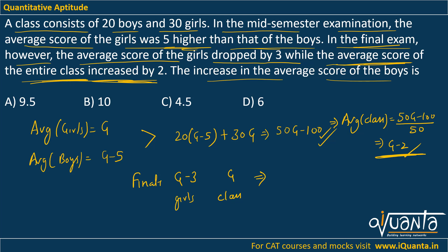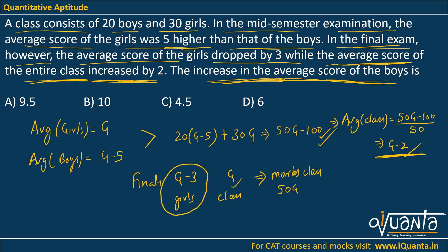In the final exam, if I find out the total number of marks scored by the whole class — the average of the whole class is g, so total marks will be 50g because there are 50 students. What we are ultimately trying to find out is the increase in the average score of the boys. In the final exam we know the average marks of all the girls is g-3, and we know the total marks of the whole class. So if I combine boys and girls and find the average of both, I will get the average of the class.